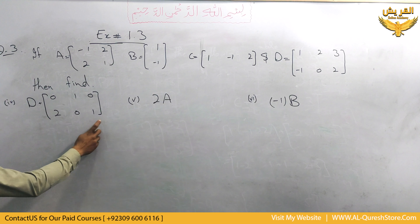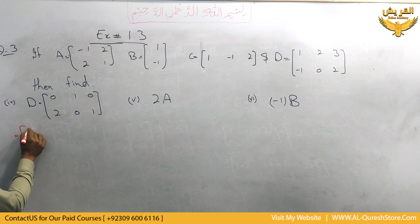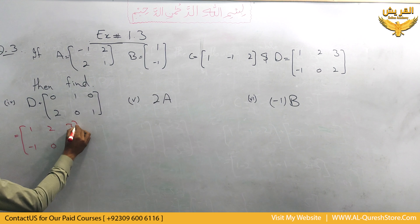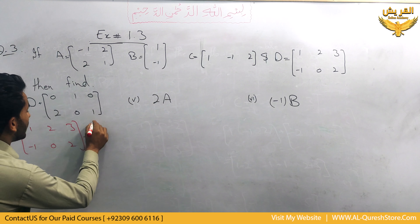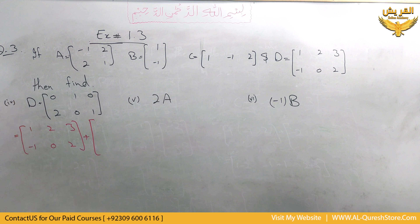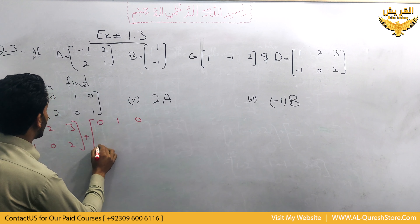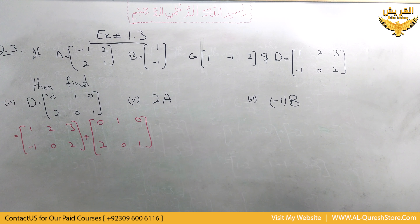For the value of D we use: 1, 2, 3, minus 1, 0 and 2. It has order 2 by 3, and the other matrix also has order 2 by 3 — with values 0, 1, 0, 2, 0, 1 — so these two matrices can be added together.